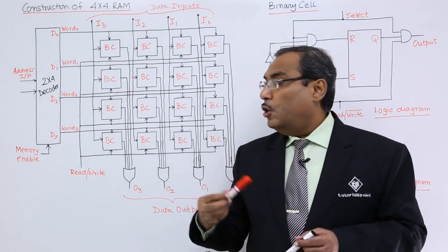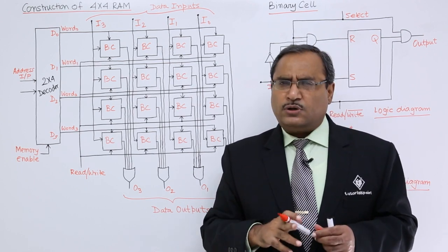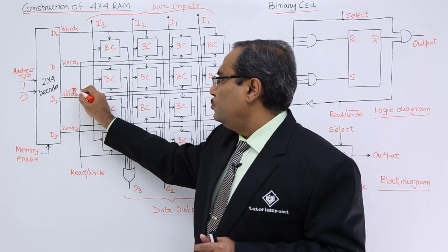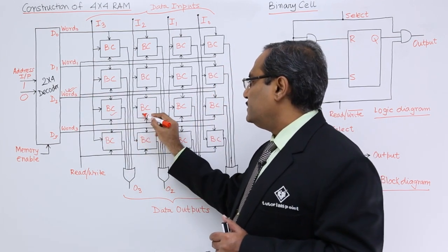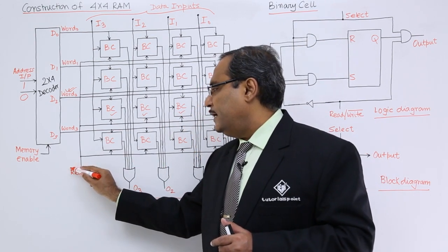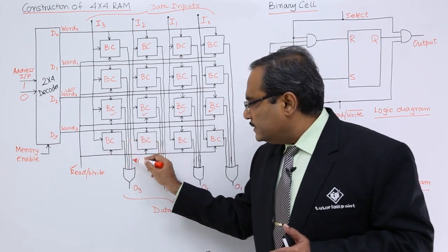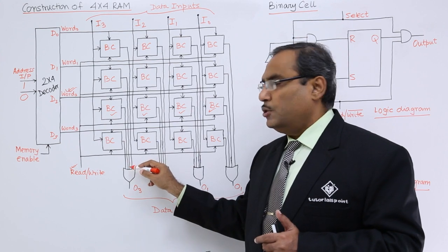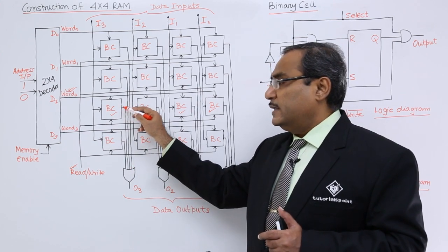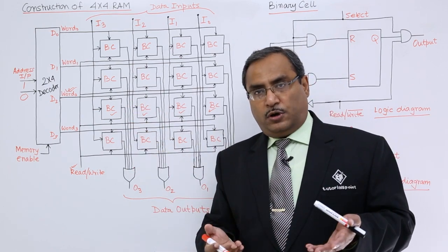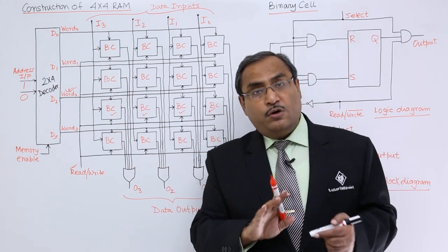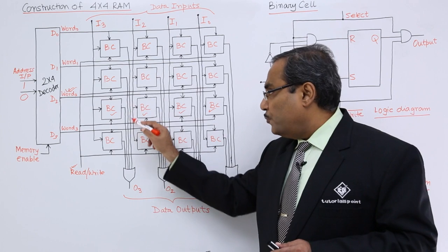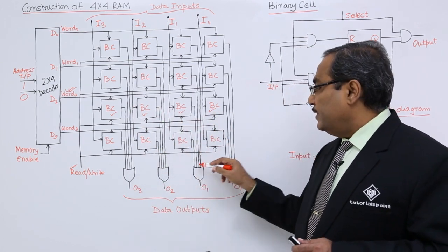Let us discuss the functionality of this 4×4 RAM circuit. Consider input 10 — this enables the corresponding word line and all 4 binary cells in that row are selected. If the read line is then enabled, the outputs come through. The non-selected binary cells contribute 0 to the OR gate input, but since the selected binary cell is enabled, it contributes its stored output — either 0 or 1. Since 0 OR A equals A, the output of the selected binary cell is obtained at the final output, and the same logic applies to the remaining 3 OR gates.